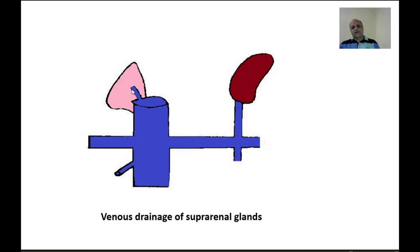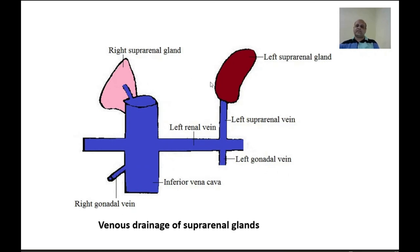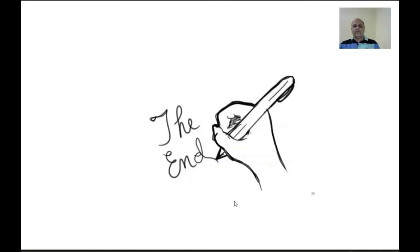The left suprarenal vein drains into the left renal vein. The left gonadal vein also drains into the left renal vein, while the right gonadal vein drains directly into the inferior vena cava. This is an important anatomical point: the right suprarenal vein drains directly into the IVC because the IVC lies close to the right suprarenal gland, whereas the left suprarenal vein drains into the left renal vein, which is closer to the left suprarenal gland.